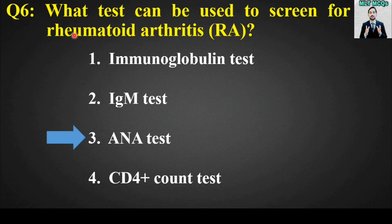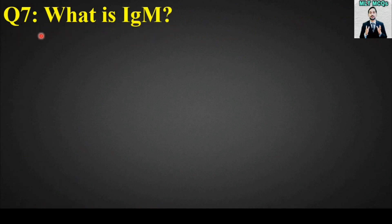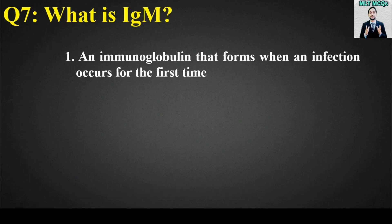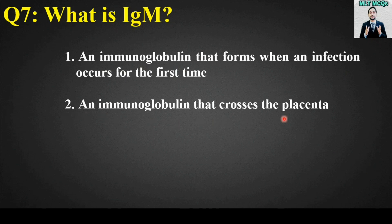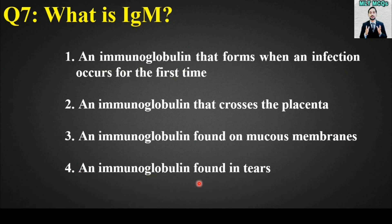MCQ number 7: What is IgM? Options are: an immunoglobulin that forms when an infection occurs for the first time, an immunoglobulin that crosses the placenta, or an immunoglobulin found in tears. The right answer is option number 1 — IgM is an immunoglobulin that forms when an infection occurs for the first time.